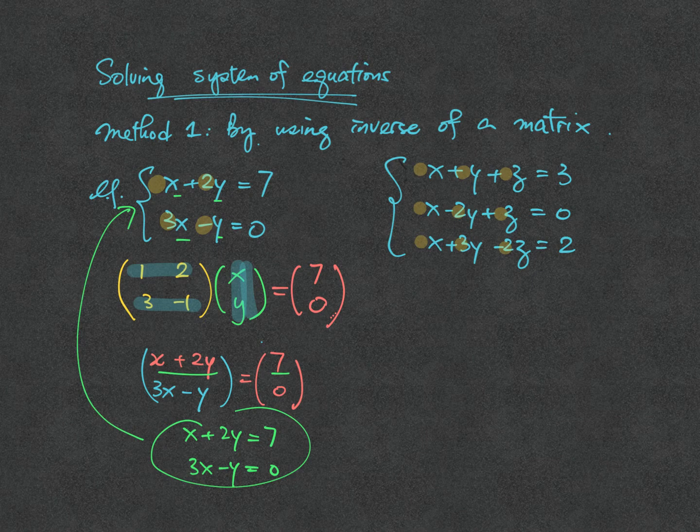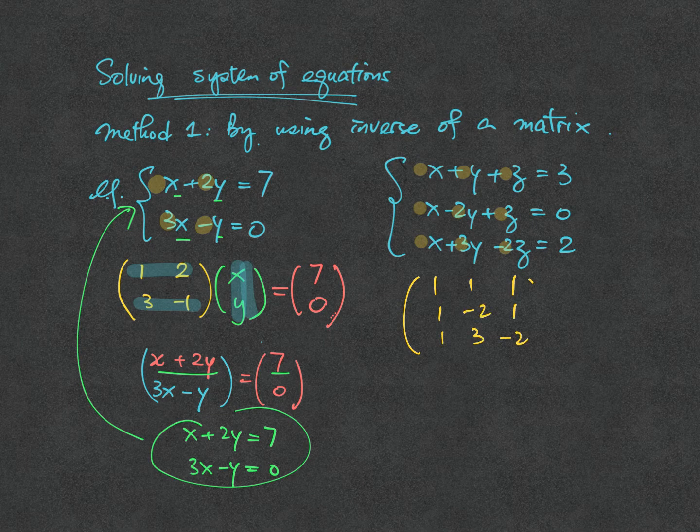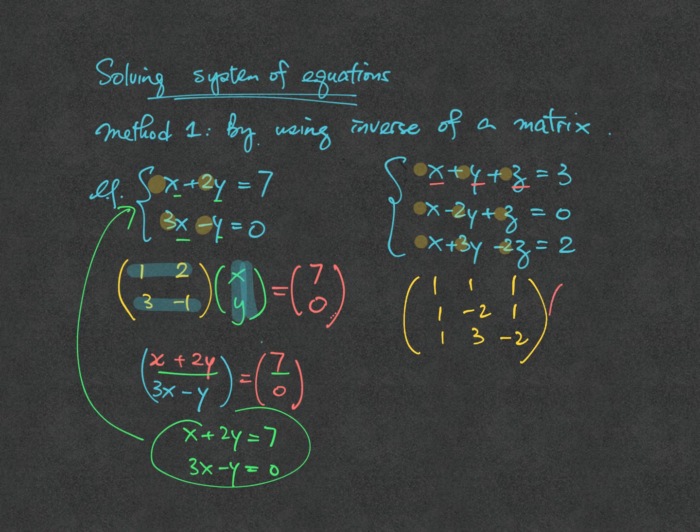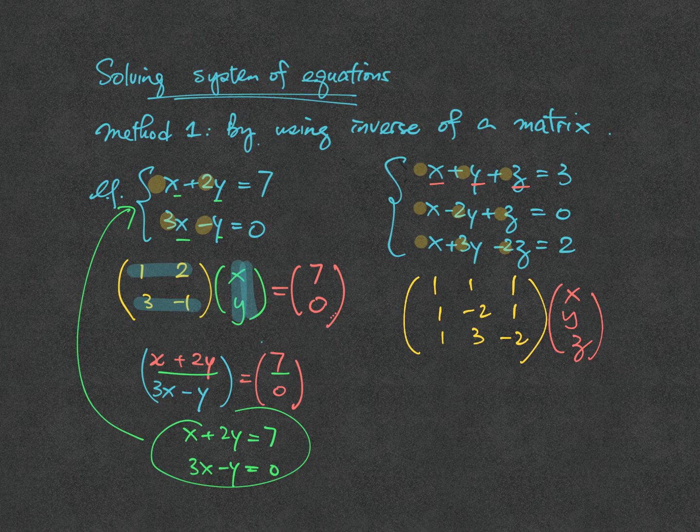They give you the square matrix 1, 1, 1; 1, minus 2, 1; 1, 3, and minus 2 respectively. Afterward, we are considering the 3 unknowns x, y, z, which we will put in a column matrix next to the 3 by 3 square matrix.